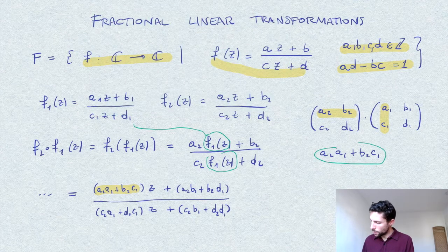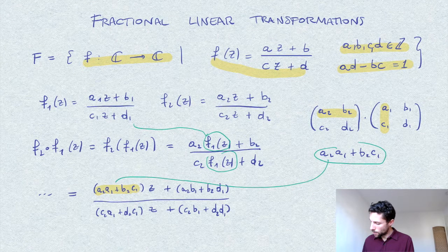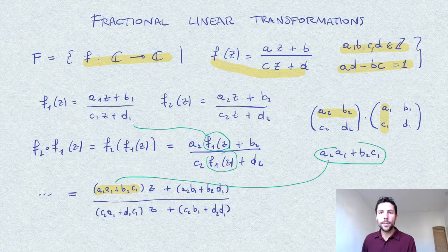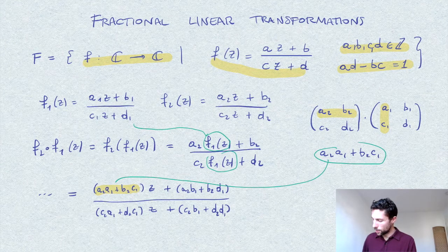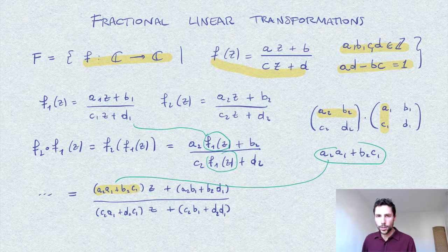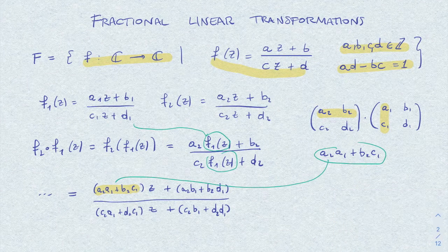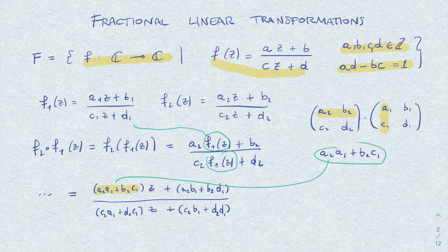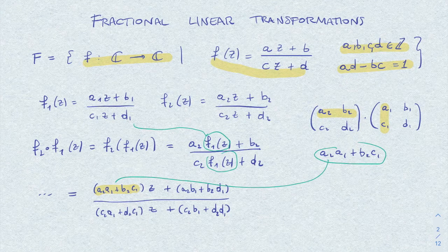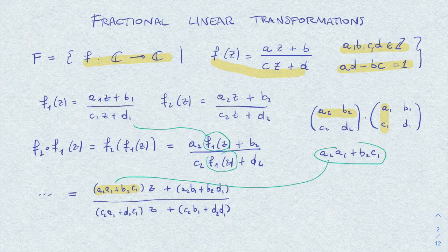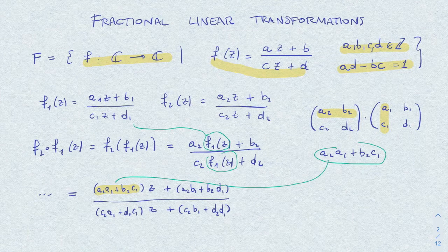Here you see it's the same coefficient appearing in this expression, and similarly for all the other entries. The clue is that the composition of two such functions corresponds to the multiplication of two matrices of this form.